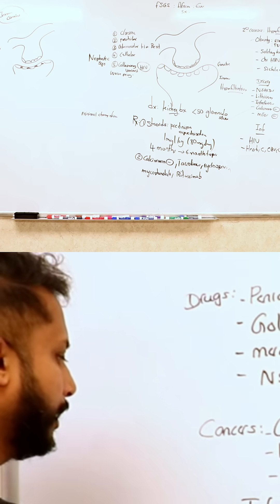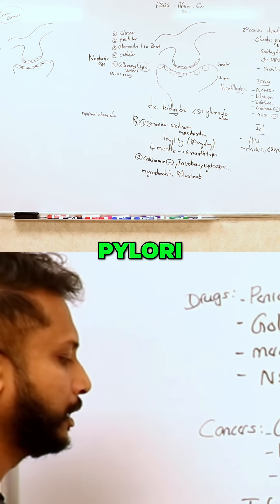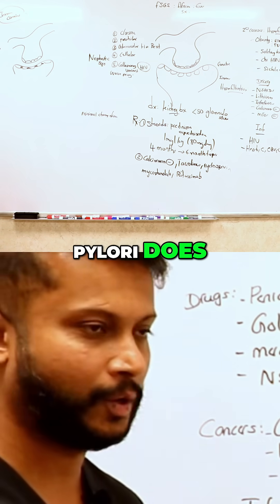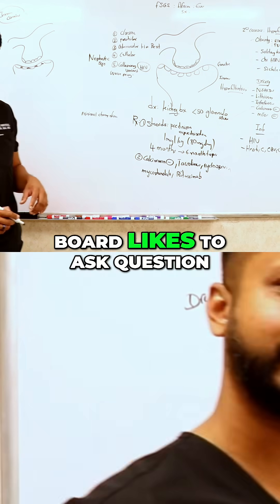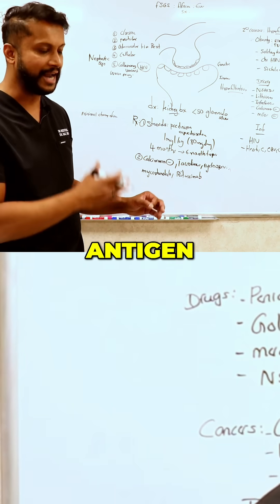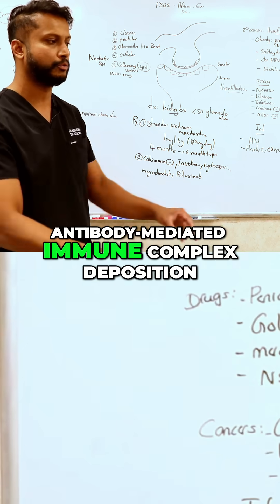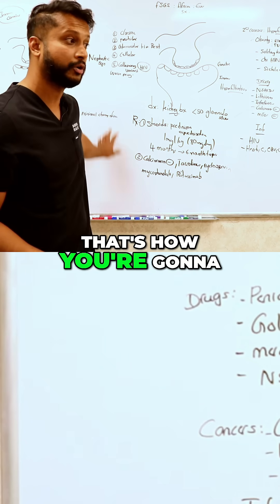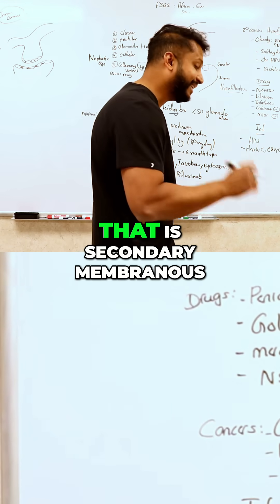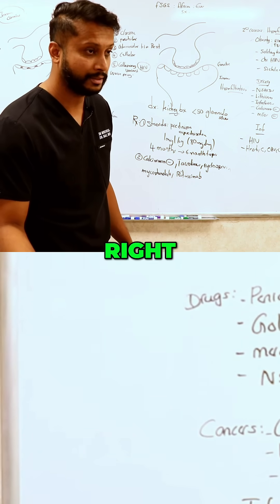Apart from that, H. pylori. Apart from all the damage H. pylori does, all the problems the board likes to ask questions about, it also causes membranous. Again, antigen-antibody mediated immune complex deposition — that's how you're going to get membranous. That is secondary membranous.